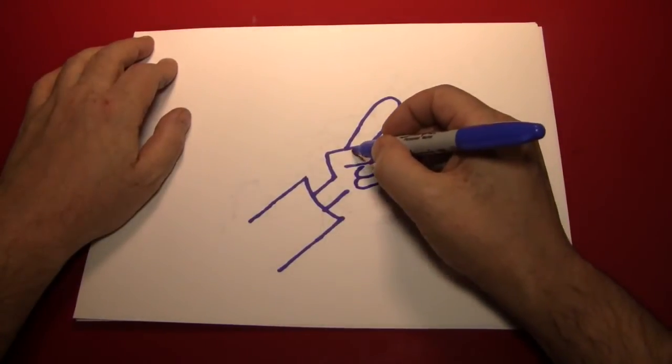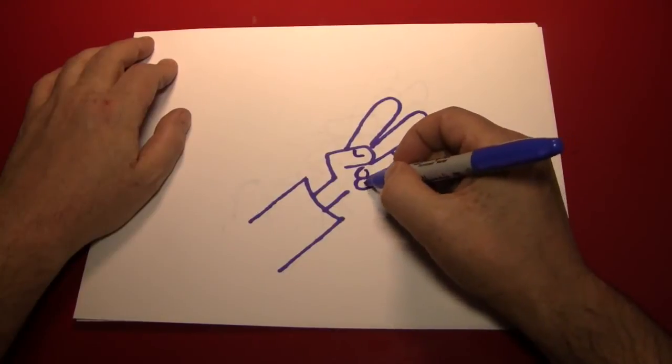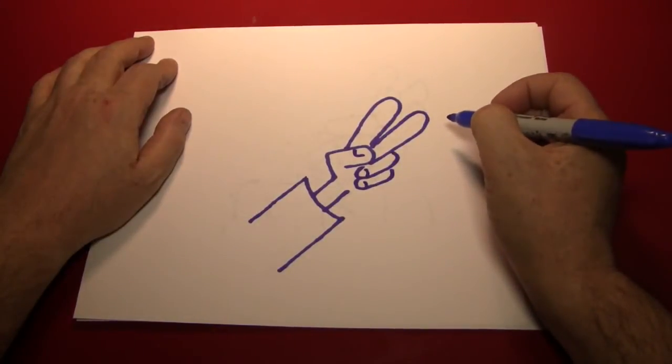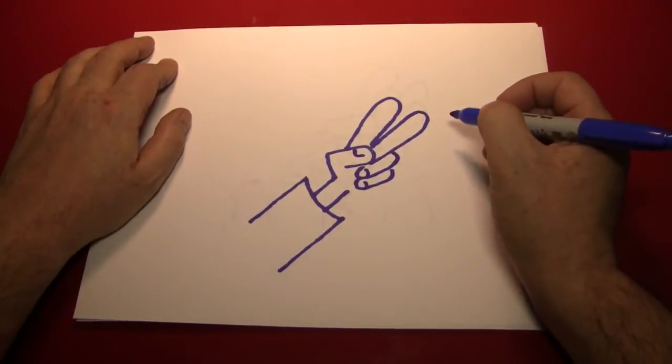Let's add some fingernails. One on the thumb, and a couple on the fingers right there. Just little lines like that are enough to indicate that.